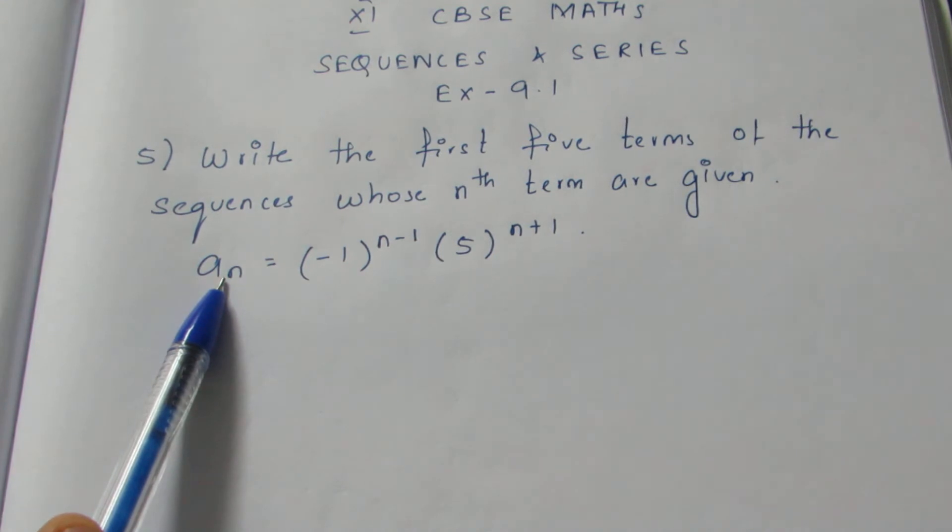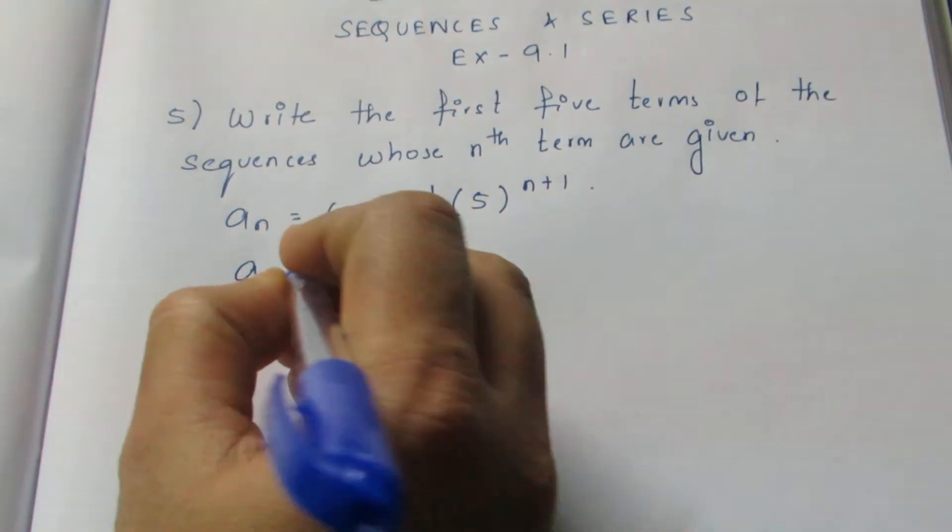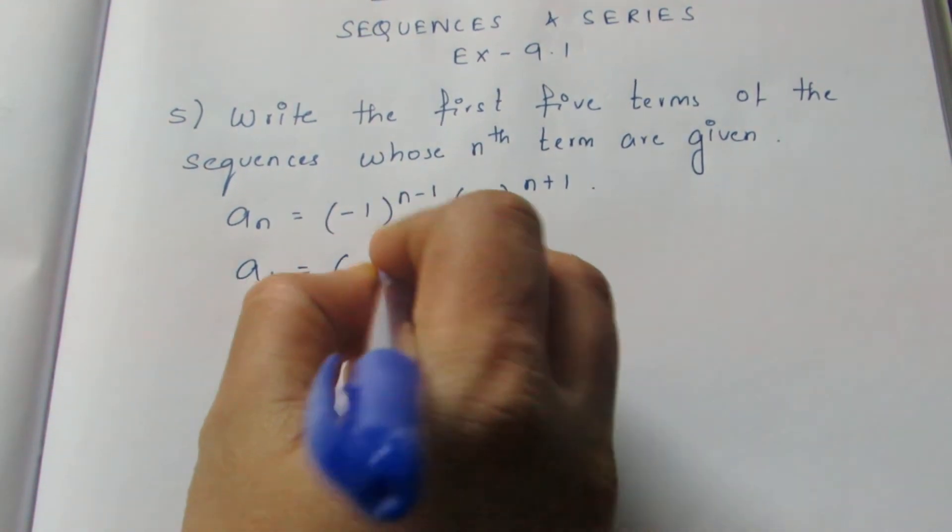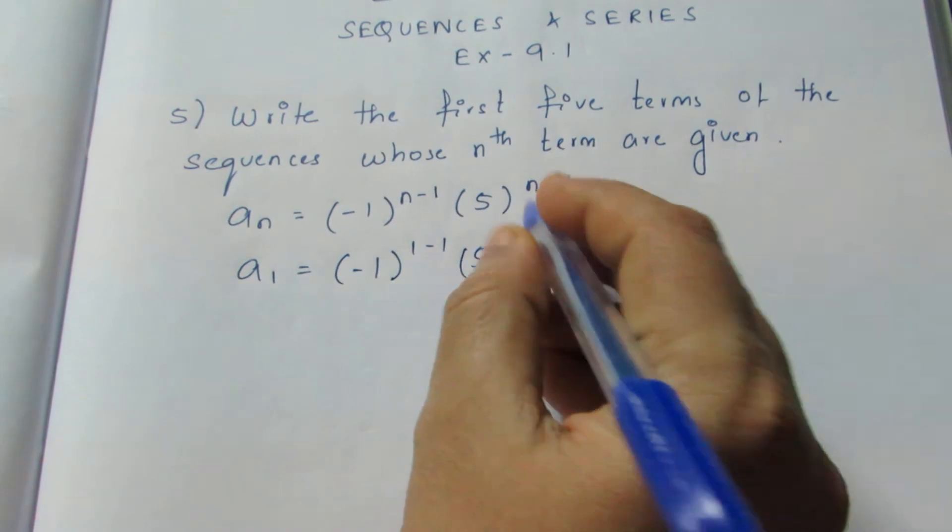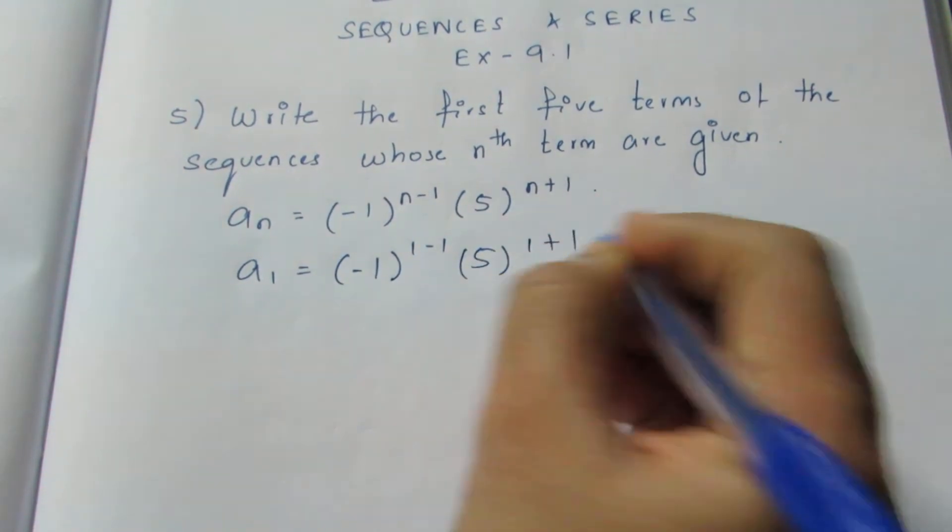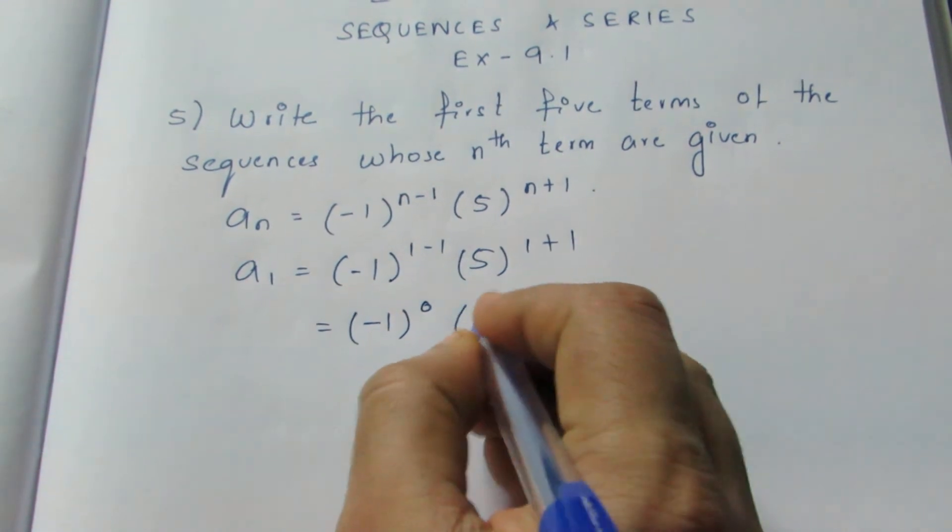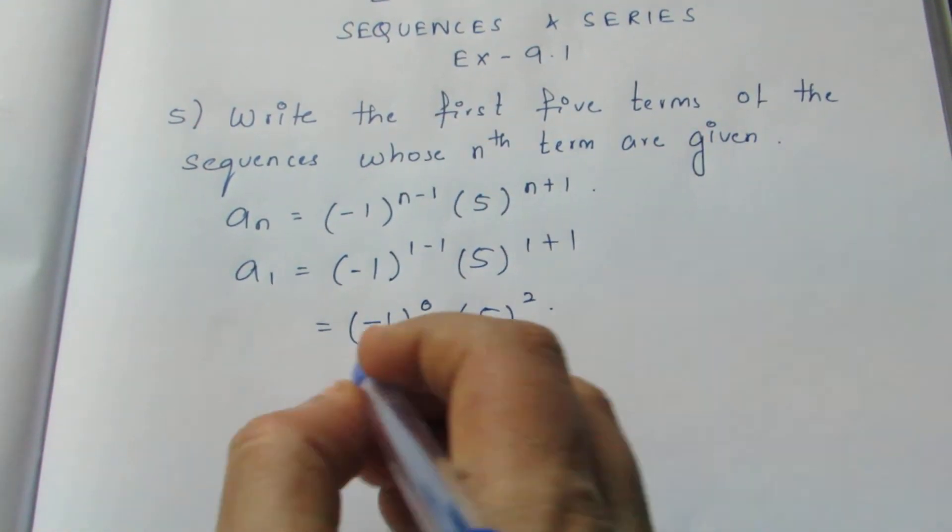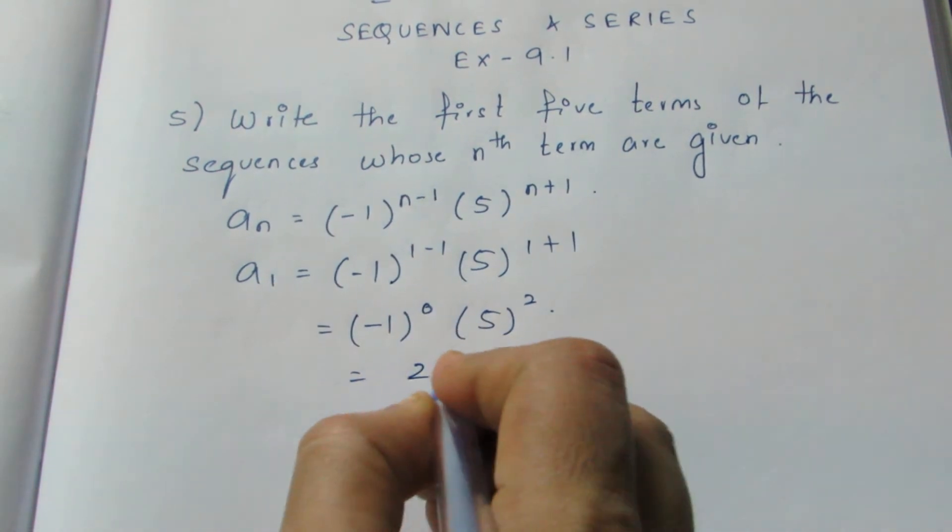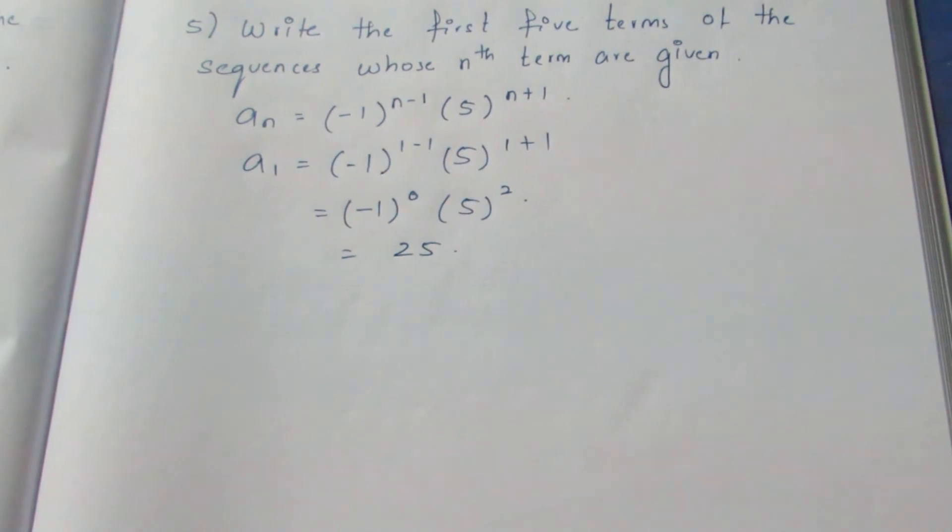If I substitute a_1 instead of n, I get my first term. So substitute a_1 instead of n. Wherever you see n, just substitute the value of 1. Here it becomes (-1)^0 times 5^2. Anything to the power 0 will be 1. So it becomes 1 into 25. 5 square is 25. So your first term will be 25.